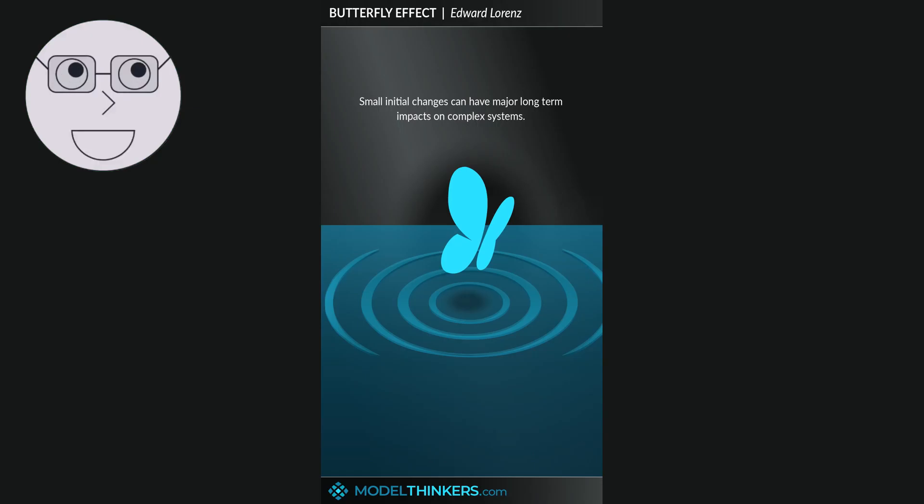One of the key ideas behind chaos theory is that small changes in initial conditions can lead to vastly different outcomes. This is often referred to as the butterfly effect, where the flapping of a butterfly's wings in one part of the world can eventually lead to a hurricane in another part of the world.